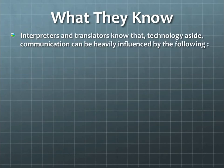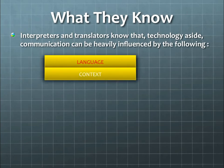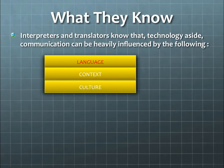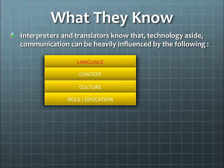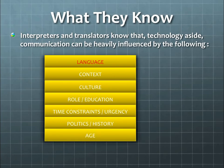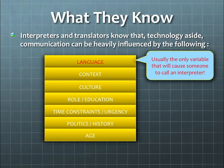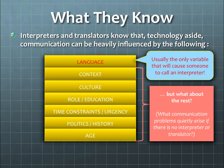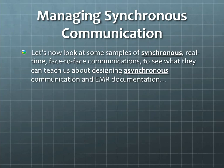What interpreters and translators know is that technology aside, communication can be heavily influenced by the following: not only language, but also context and the scenario that the communication is happening in, culture, the role and education of both the sender and the recipient, time constraints and urgency for both parties, the politics and history, and even the age of both parties. The challenge is that language is usually the only variable that will cause somebody to reflexively get an interpreter. But what happens with these other variables and the communications problems that quietly arise if there is no interpreter or translator present?